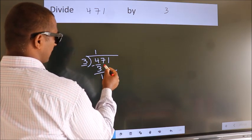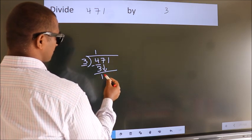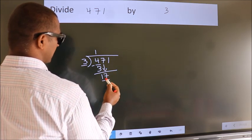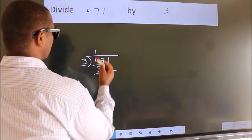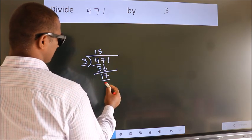After this, bring down the beside number. So, 7 down. So, 17. A number close to 17 in 3 table is 3 5s 15.